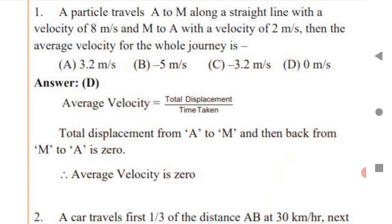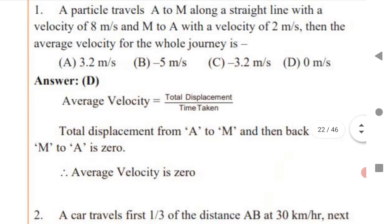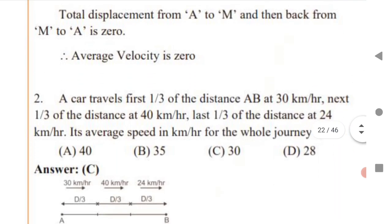The first question: a particle travels from A to M along a straight line with a velocity of 8 m/s and M to A with a velocity of 2 m/s. We need to calculate average velocity. The formula is total displacement by total time taken. Whenever someone goes from A to M and comes back to the same place, displacement is 0. So the average velocity becomes 0. Very simple question.